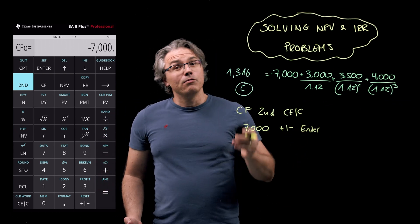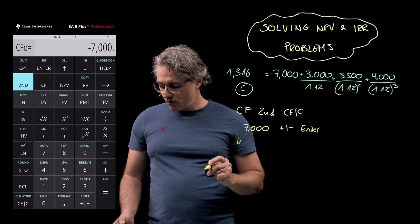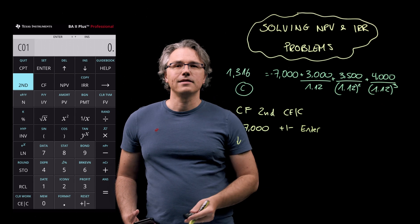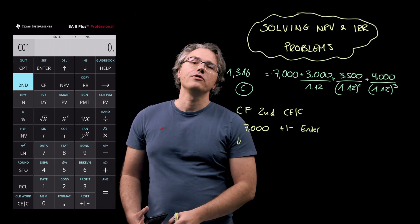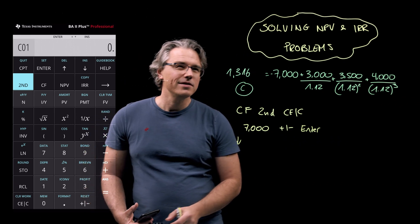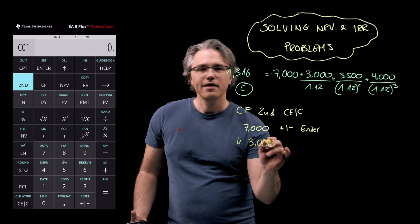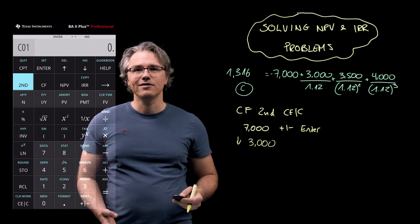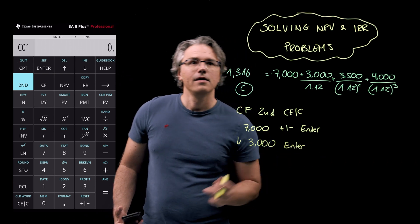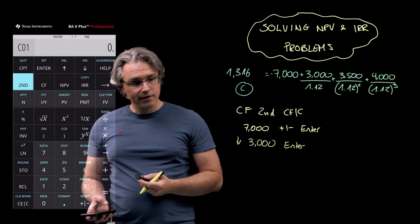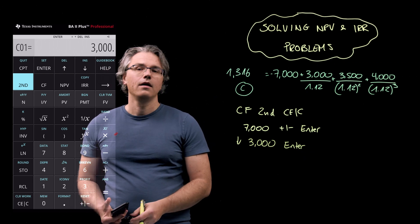And now you want to press the down arrow so as to move on to the next input. That's the cash flow at time one. We want to make this a positive 3000. So let's type 3000. No need to do plus minus this time. Just follow it up with enter.